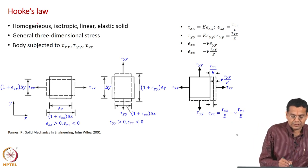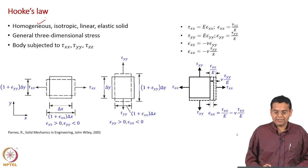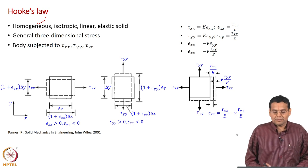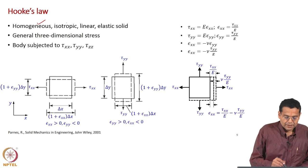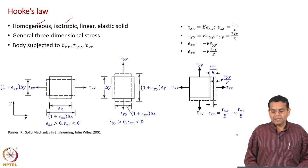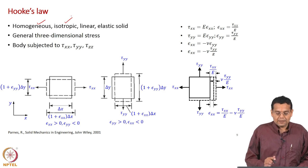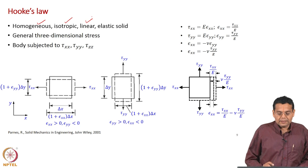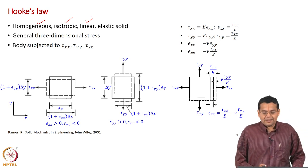What are the assumptions? Homogeneous: properties are the same at any point. We have looked at three material properties — Young's modulus, shear modulus, and Poisson's ratio. Isotropic: at a point, material properties are the same in all directions. And linear elastic solid.